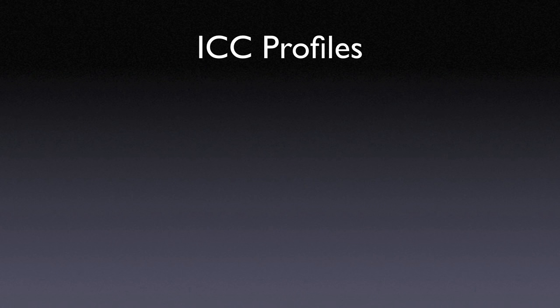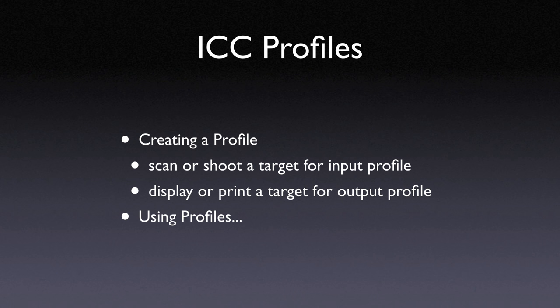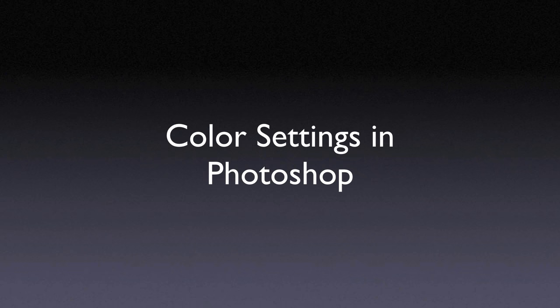So just how do we get ourselves some good profiles? These days, reasonably good profiles are fairly easy to find, and as a photographer you don't have to get too involved in creating many profiles from scratch. To create a profile you need to scan or shoot a target for an input profile, or display or print a target for an output profile. The only profiling activity photographers absolutely need to concern themselves with is the monitor profile, and that is automatically generated during the calibration process. Most of the time our interaction with color management profiles is a 'set and forget' kind of affair, done mostly in the color settings in Photoshop.